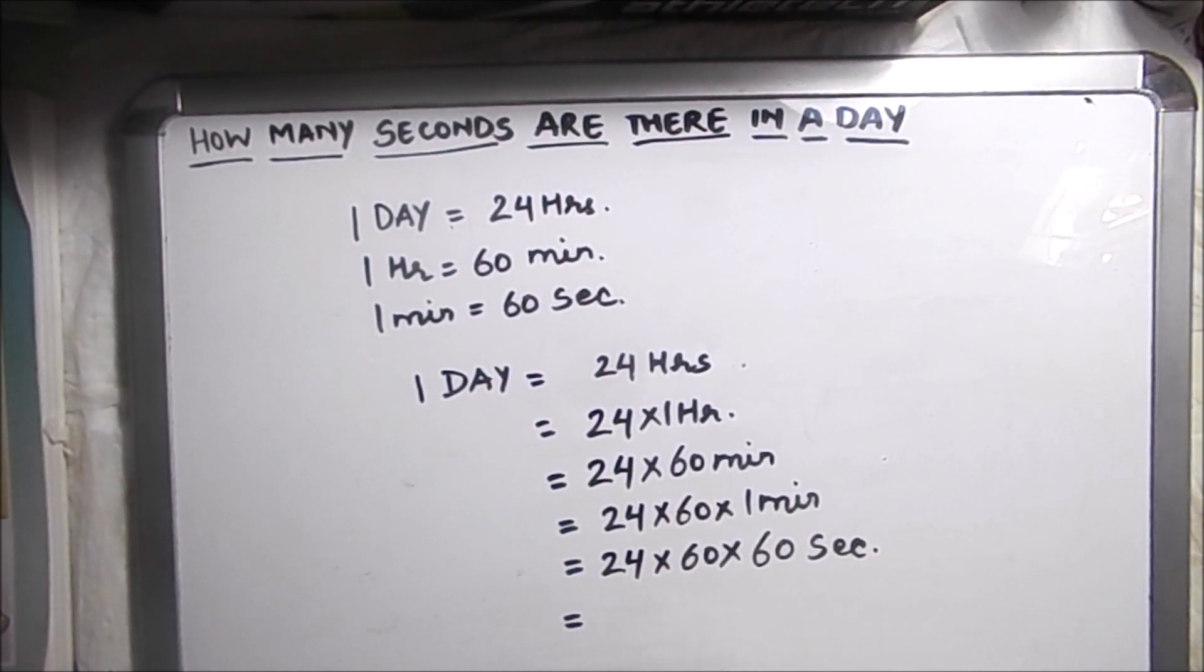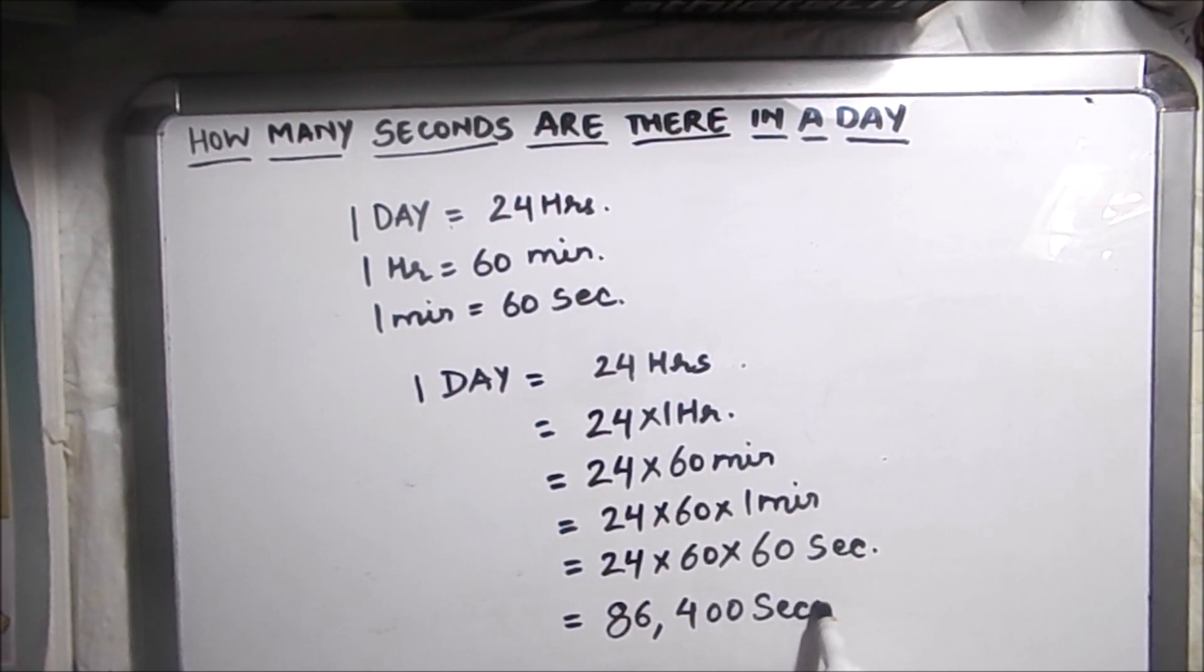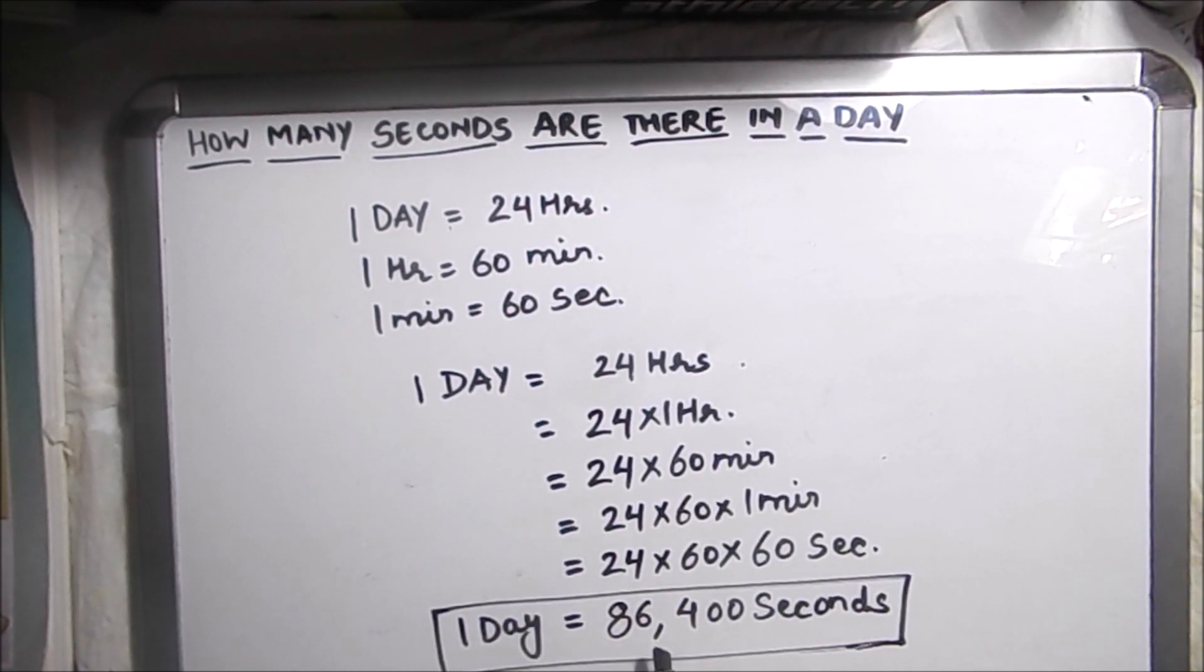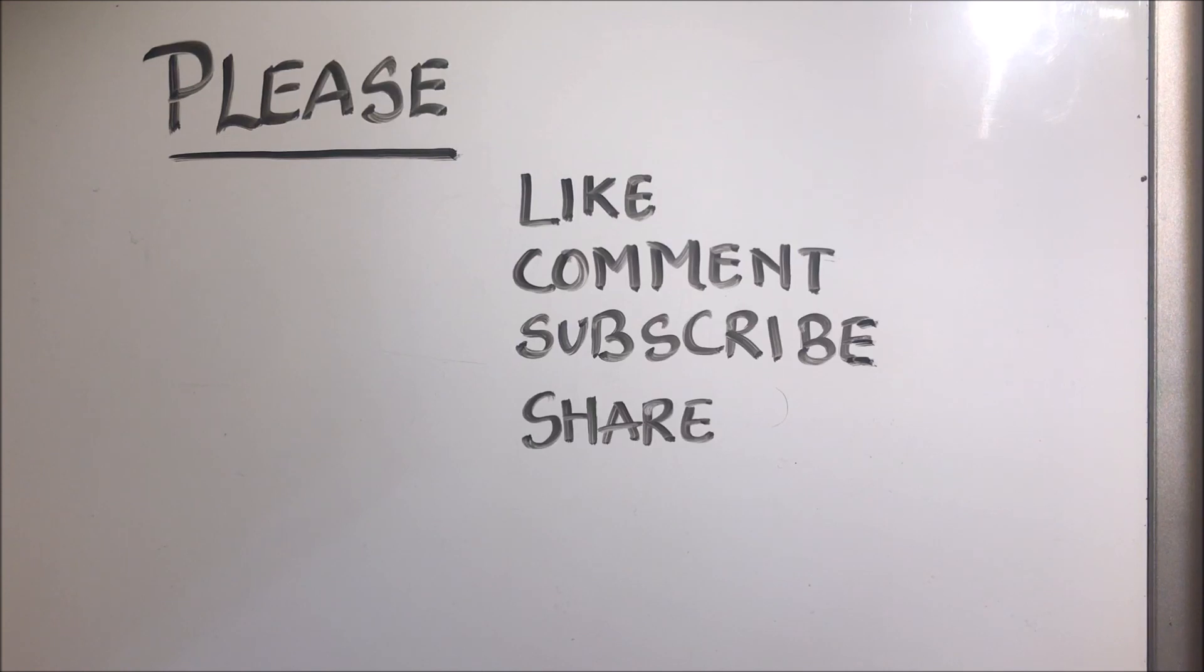And it is going to be 86,400 seconds. So one day is equal to 86,400 seconds. That's how we calculate seconds in a day. Thanks for watching, please like, comment, subscribe and share my videos.